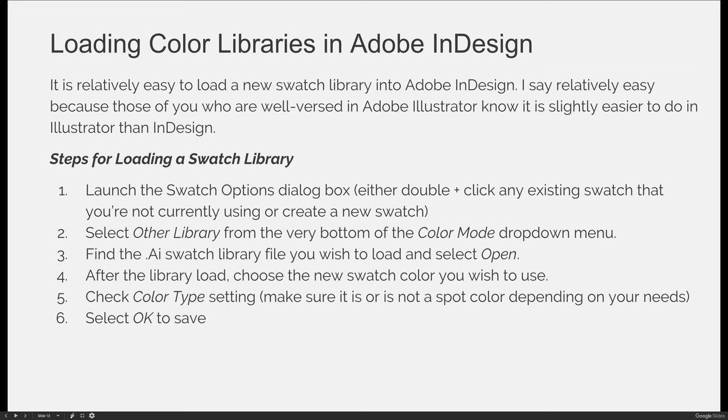Once it's loaded, you can check the color type drop-down to make sure you're adding a spot color or not, depending on your needs, and then select OK. If you're not choosing a specific color and just wanted to load the library, you still have to select OK so it saves your changes. The next time you want to use that library, you can go in and it will be on the list.